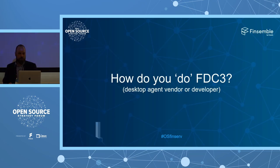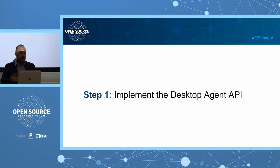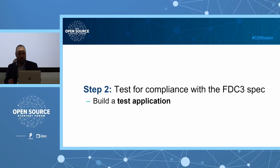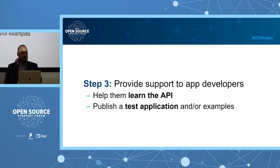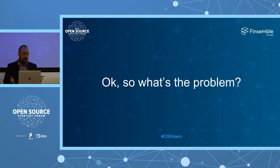From a desktop agent vendor or developer perspective: you'll wade in and implement the Desktop Agent API, then test it for compliance with the FDC3 specification — which means building a test app again. Once it ships, you provide support to application developers by helping them learn to use the API, and you publish test applications or examples for them to use.